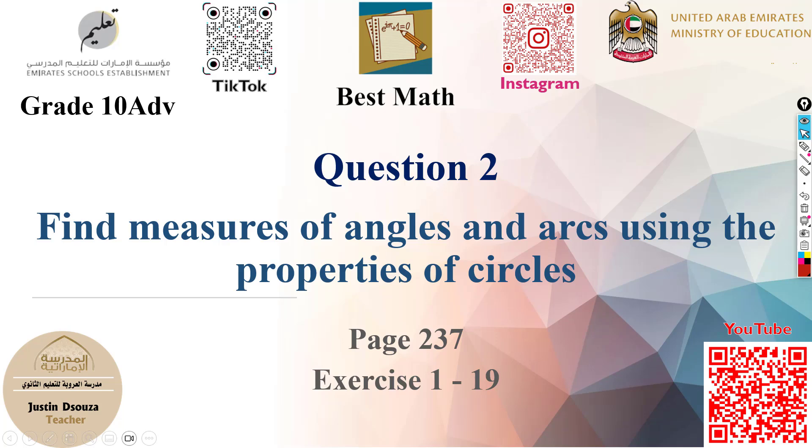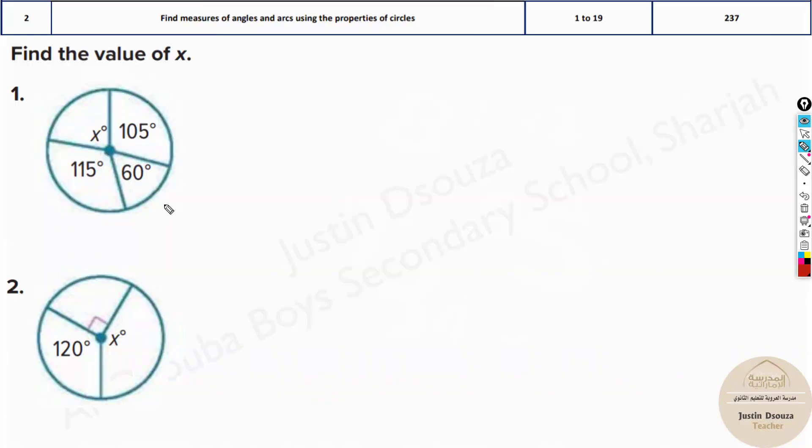Question two is to find angle measures using different properties of circles. Here we have been given a circle where one angle is unknown, that is x degrees, but the others are all known. So how do we find this?